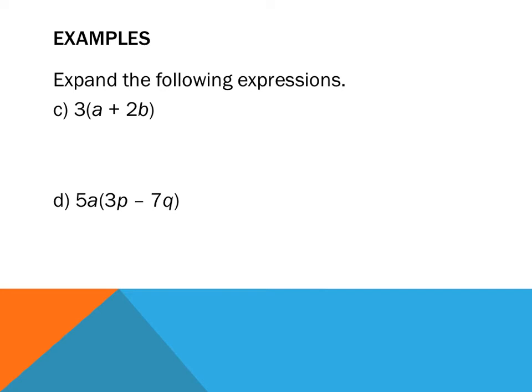Next example: I've got a 3 on the outside and in brackets a plus 2b. You might notice the second term in the brackets has both a number and a pronumeral. I approach this in a very particular way. 3 multiplied by a becomes 3a. Now 3 multiplied by positive 2b — I deal with my numbers first and my pronumerals second.